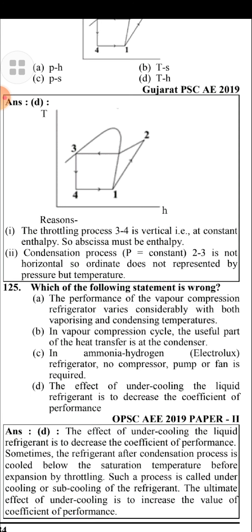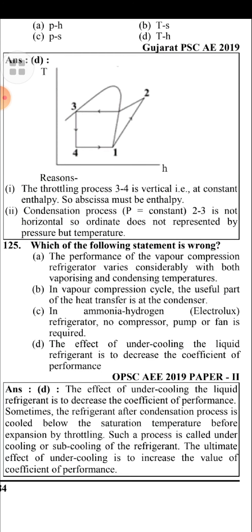The statement that under-cooling the liquid refrigerant decreases the coefficient of performance is wrong. The performance of the vapour compression refrigeration varies considerably with both vaporizing and condensing temperature. Sometimes the refrigerant after condensation is cooled below the saturation temperature before expansion by throttling; such a process is called under-cooling or sub-cooling. The ultimate effect of under-cooling is to increase the coefficient of performance.